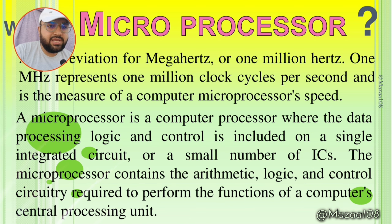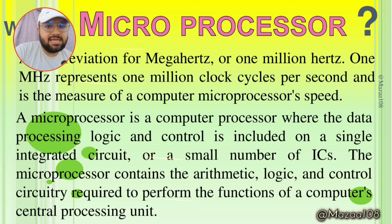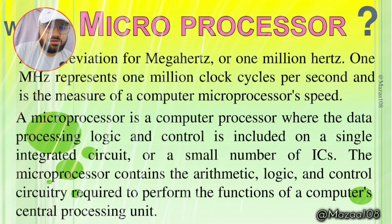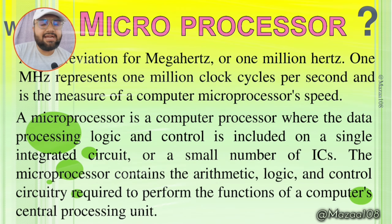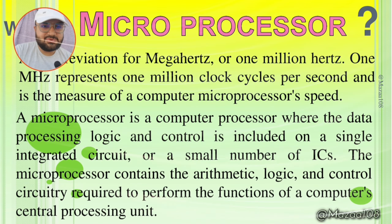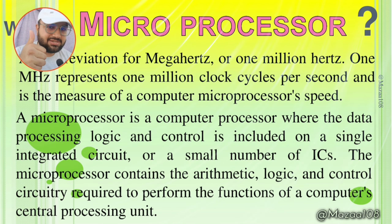A microprocessor is the computer processor where the data processing, logic, and control are handled, including a single integrated circuit or a small number of ICs. The microprocessor contains the arithmetic and logical control circuits required to perform the functions of a computer's central processing unit. It's called a microprocessor.